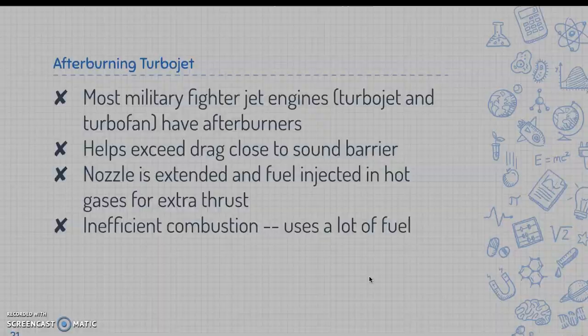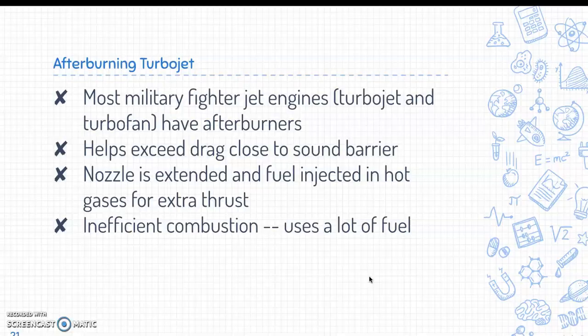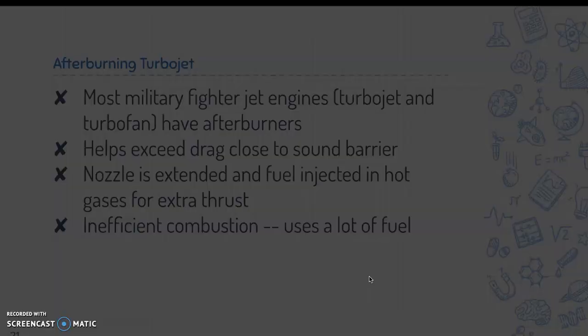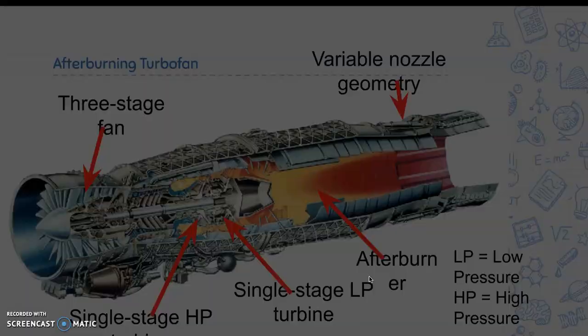Most military fighter jet engines — both turbojet and turbofan — have afterburners. The afterburner helps exceed drag close to the sound barrier. The nozzle is extended and fuel is injected into hot gases for extra thrust. Afterburners have inefficient combustion and use a lot of fuel.